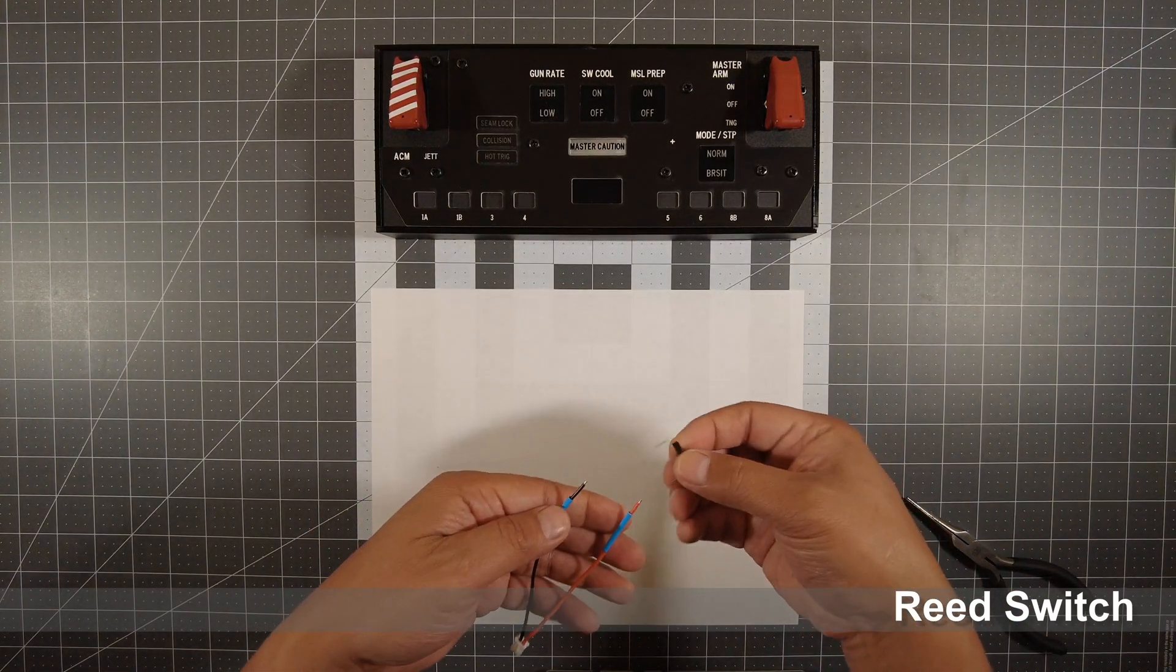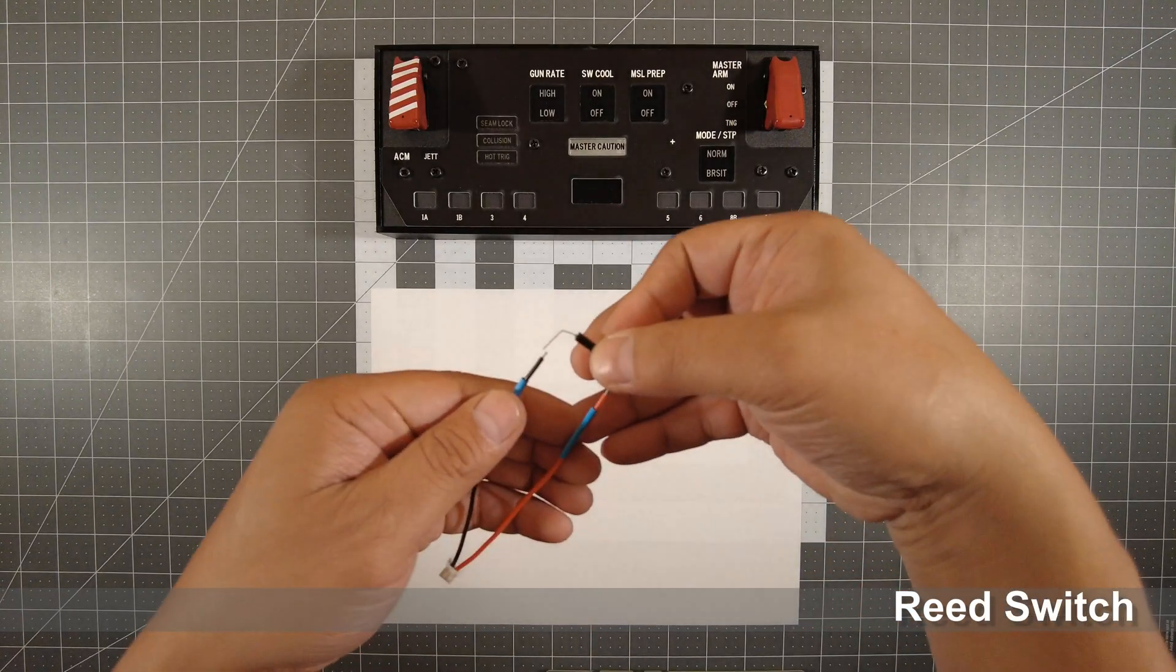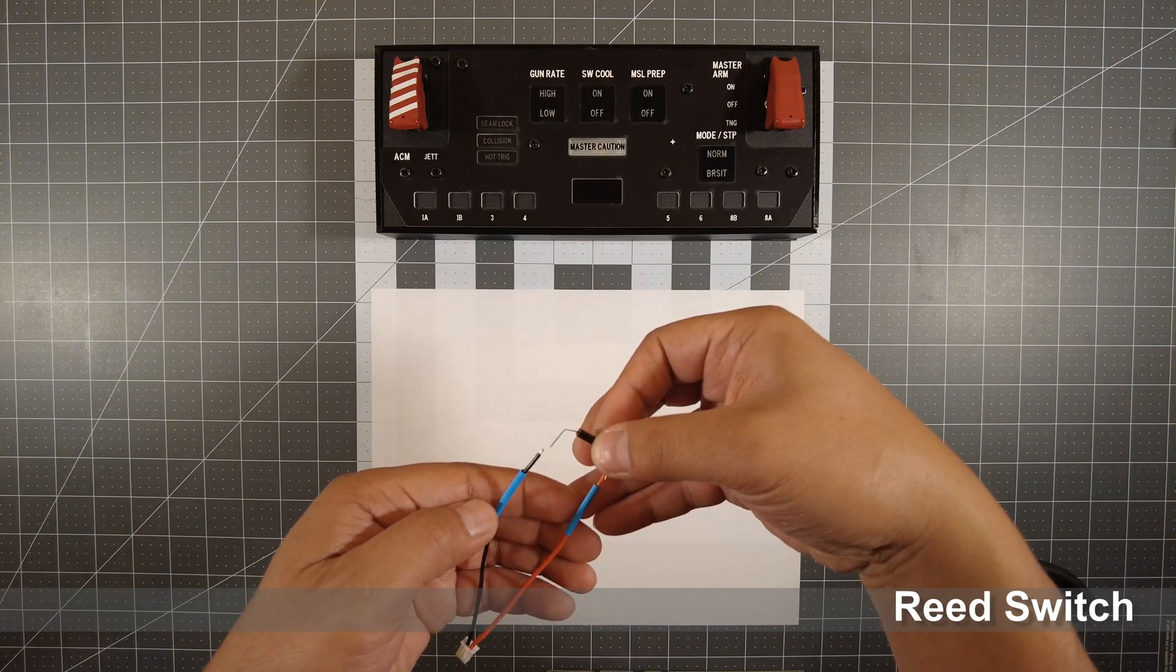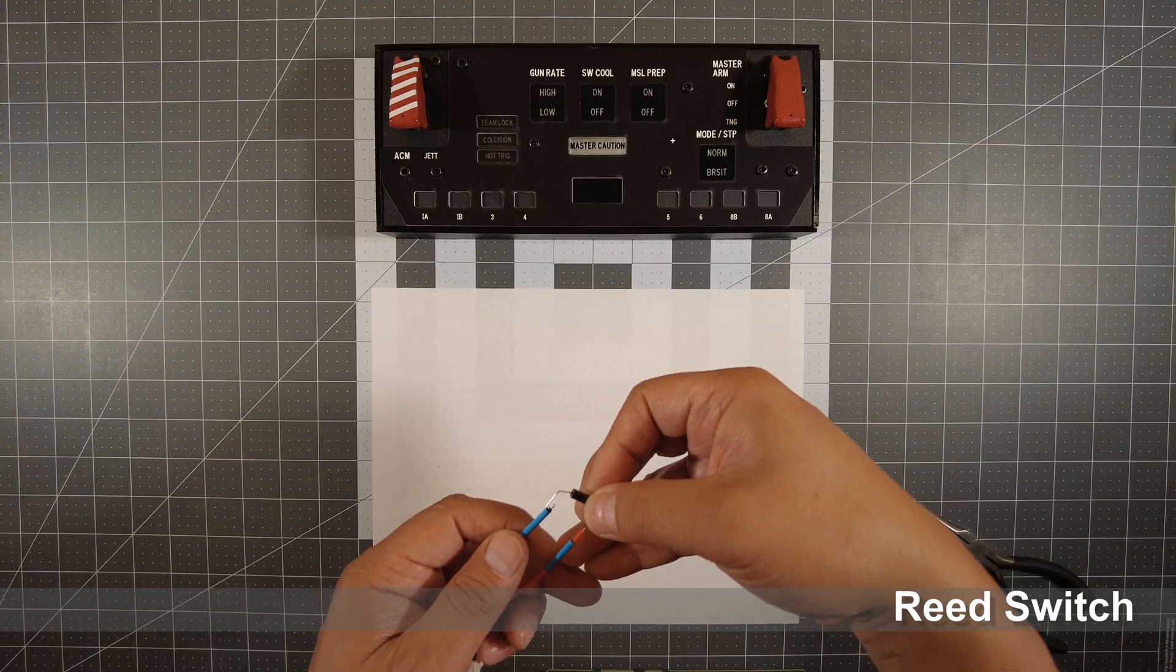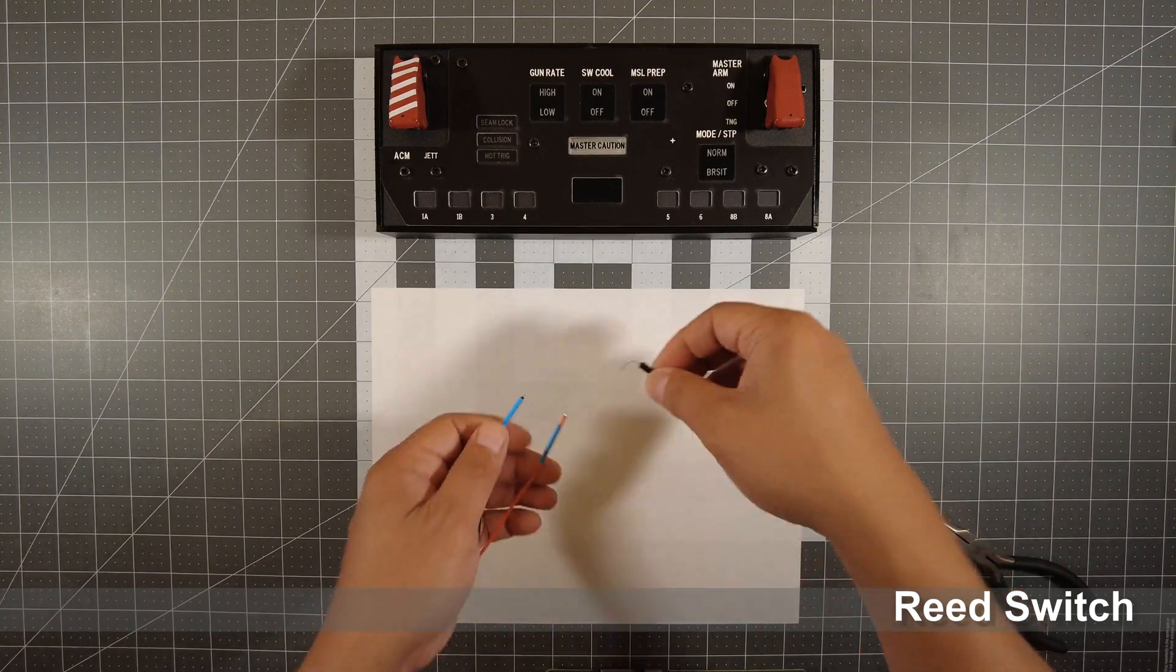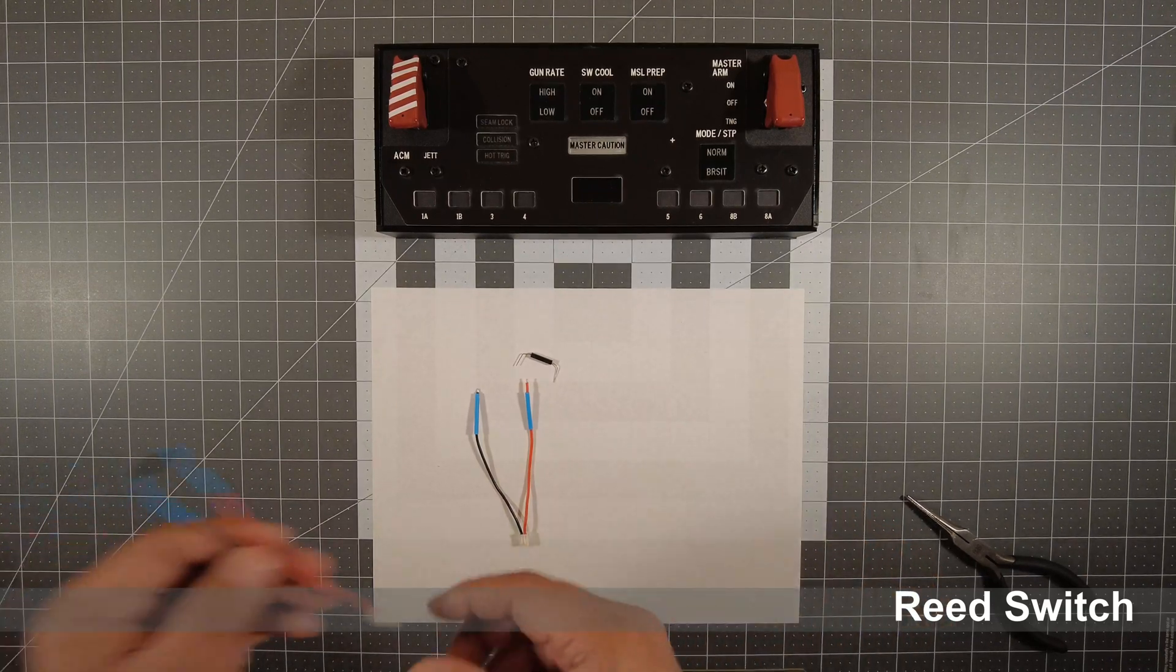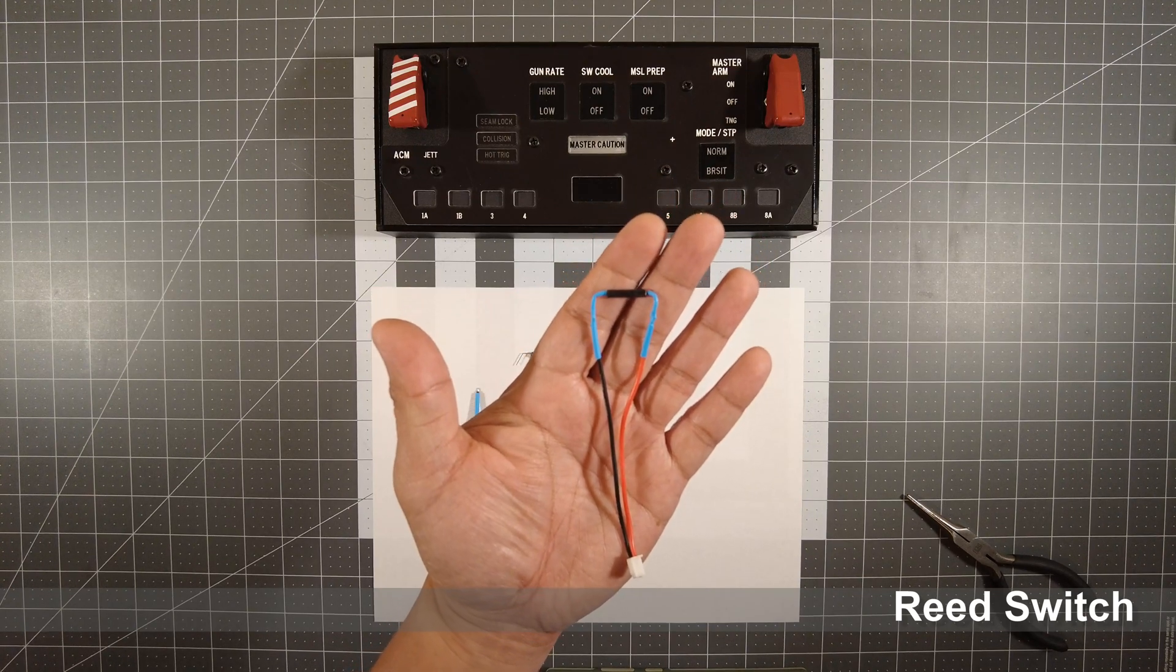Then you're going to solder the reed switch to the wires. Once you solder the wires, place the shrink wrap over the solder joints. This is what it's going to look like after you put everything together.